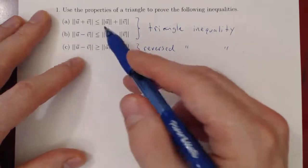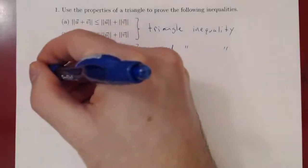So we have two vectors u and v. Let's try and construct a triangle from these two vectors.